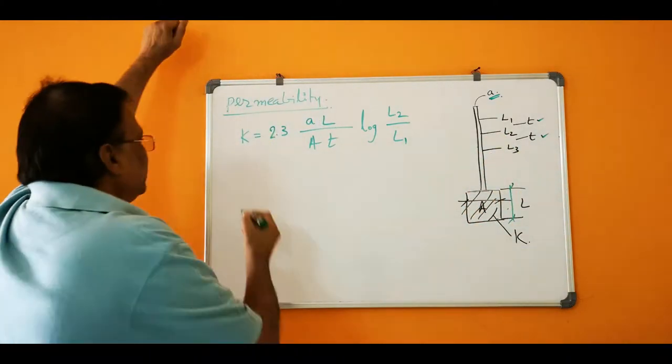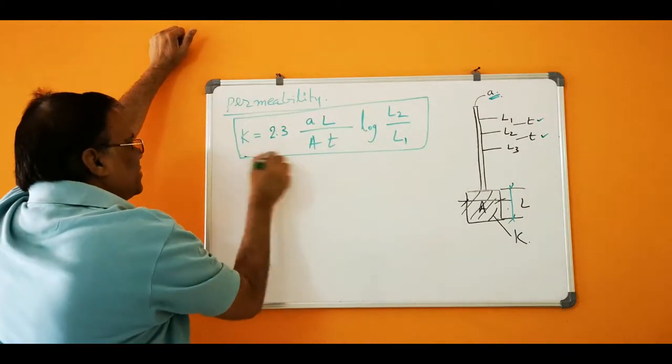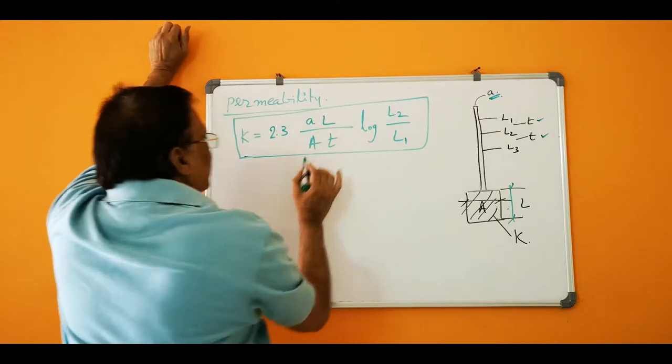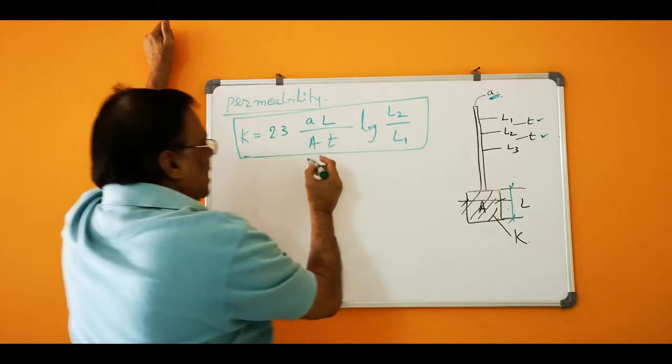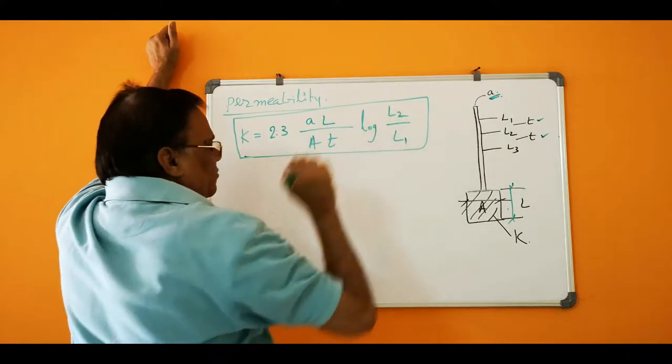Then the permeability K is equal to 2.3 times small a times L divided by capital A times T, times log L2 by L1. This is given.